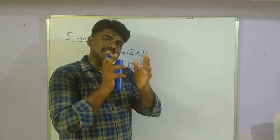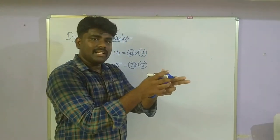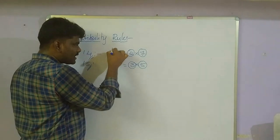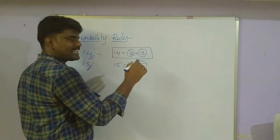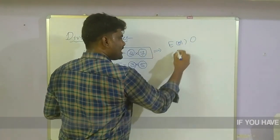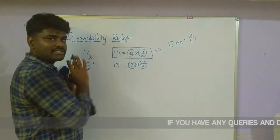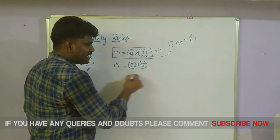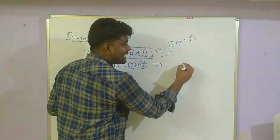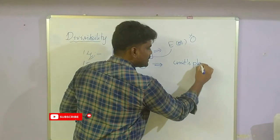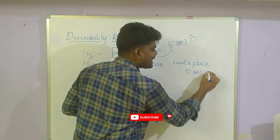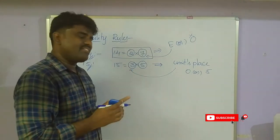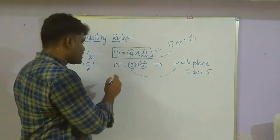The given number's last digit must be 0 or 5. If it is, then check the 3 divisibility rule — that is enough. If the units place is anything other than 0 or 5, the number is not divisible by 15. For 14: first check if the given number is even or odd. If it is odd, it is clearly not divisible by 14. If it is even, then check the 7 divisibility rule.